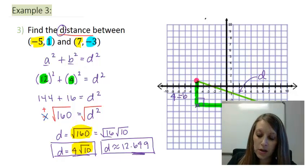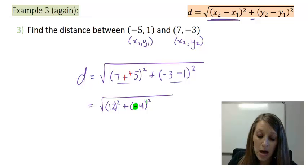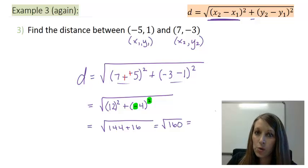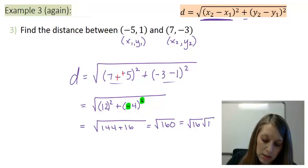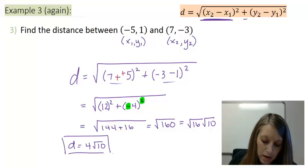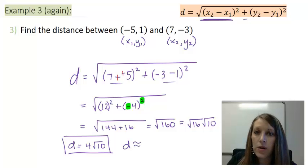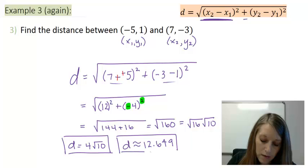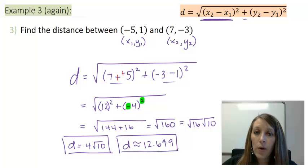The only difference is by using the formula we have a negative involved, but that won't matter because it cancels out with our square. So 12 squared gives 144, plus 4 squared gives 16, which simplifies to square root of 160. We can simplify that to 4 square root of 10, and the approximate answer is 12.649. We see that either way — using Pythagorean's Theorem or the formula — we get the same answer, because the formula comes from Pythagorean's Theorem.